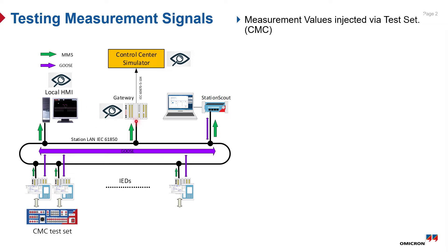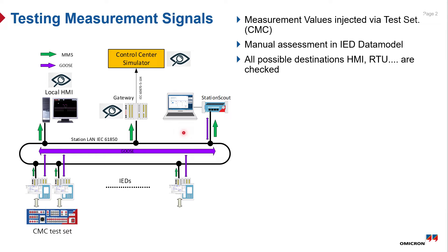We can also check different destinations these signals are communicated to, such as gateway, local HMI, or another test client like IED Scout. Please note that the values injected by the test set may differ slightly with the values read from the IED. For that, we have a 5% margin to make it easier to assess the result. Alright, let's proceed to test now.